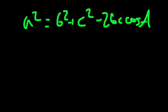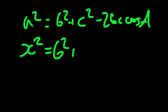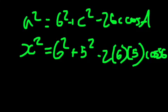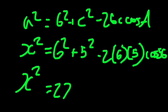And we can just solve this out. So we know that the a is going to be the x, so it's just x squared is equal to 6 squared plus 5 squared minus 2, 6, 5 cos 56.